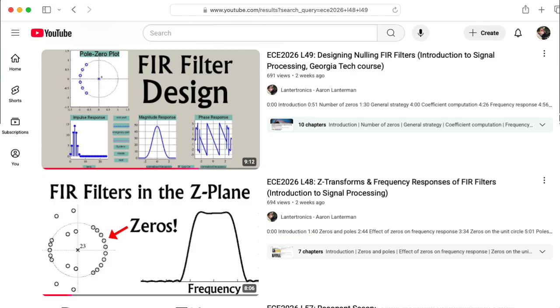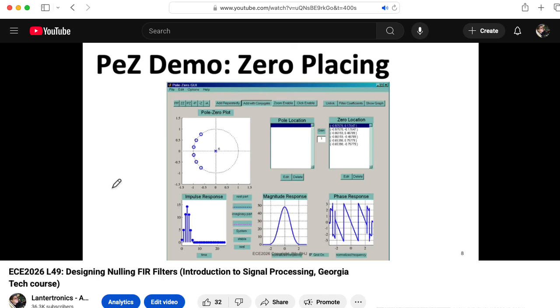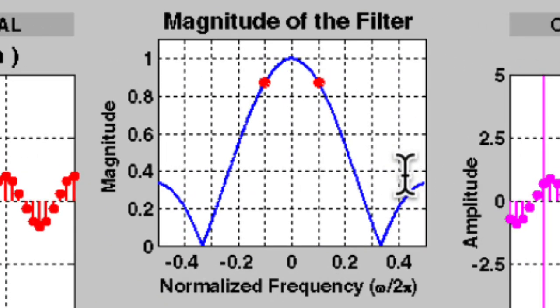Previously in EC2026 Introduction to Signal Processing, we looked at finite impulse response filters that could exactly null undesired frequencies by placing zeros at the points on the unit circle corresponding to those frequencies. The trouble with the FIR filter approach is that the valleys around the nulls may be wider than what you want. There may be frequencies you want to let through that are near the frequencies you want to eliminate, but those frequencies you want to let through wind up heavily attenuated.